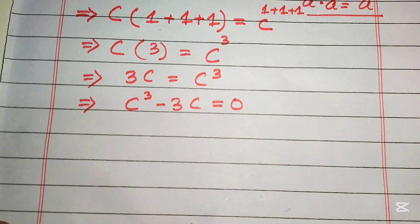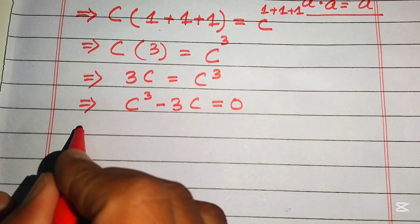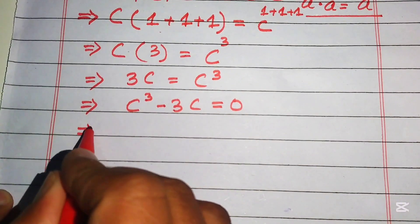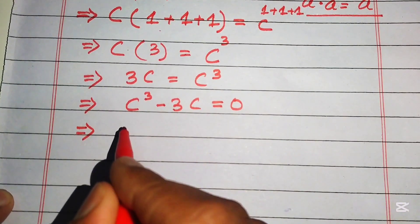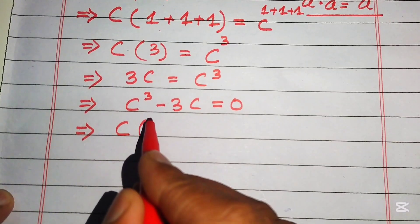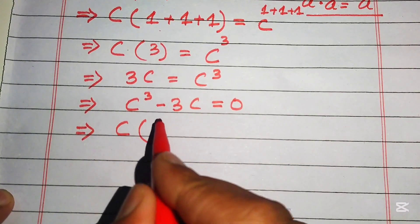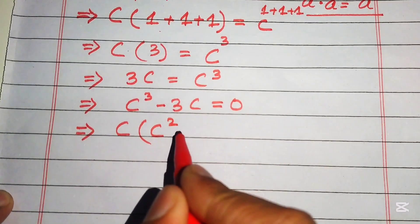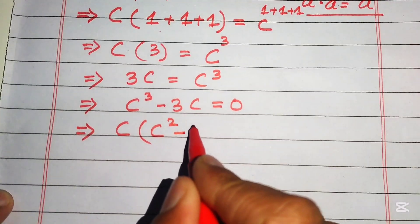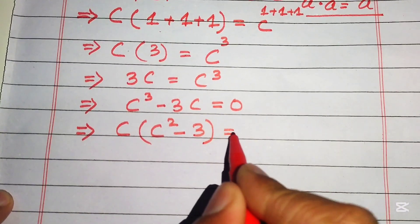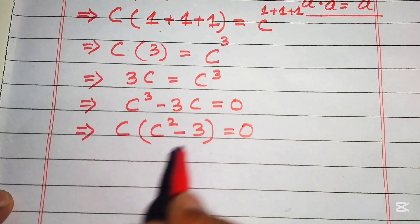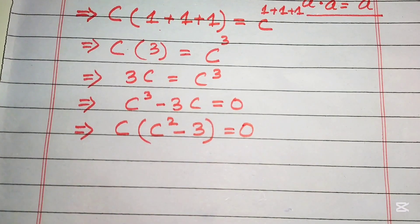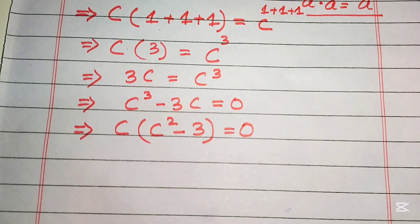Focusing on the left-hand side, c is the common term. We factor out c and get c squared minus three equals zero.